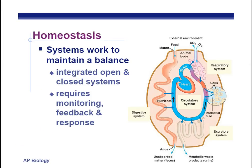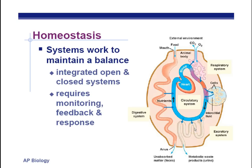Homeostasis: organ systems work to maintain a stable internal environment. In a generalized organism diagram, food coming through the intestines is digested and nutrients are absorbed into the circulatory system. The heart pumps blood around; oxygen is picked up at the respiratory system and carbon dioxide is dropped off. At the cells, interstitial fluid surrounds the cells, and exchange — usually by diffusion or active transport — occurs between all cells in the body. Waste products are removed from the blood and eventually leave the body.